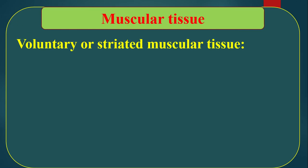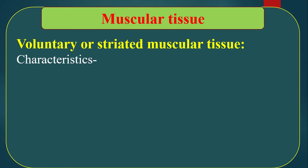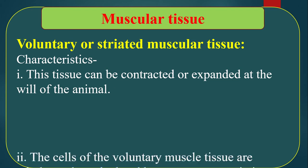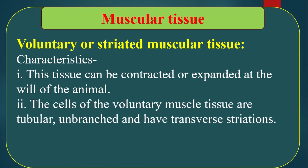Voluntary or striated muscular tissue. Characteristics of voluntary muscle — number one: this tissue can be contracted or expanded at the will of the animal. That is why this kind of tissue is called voluntary tissue.